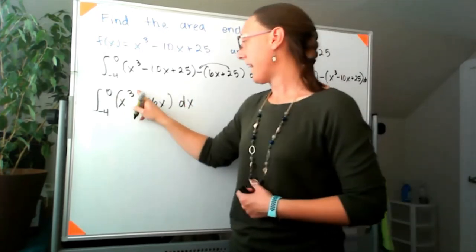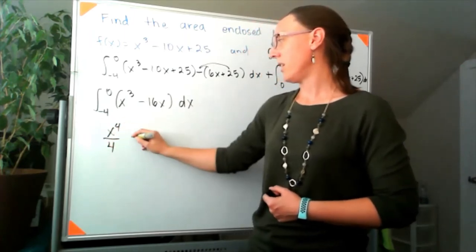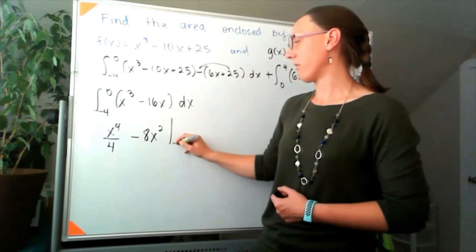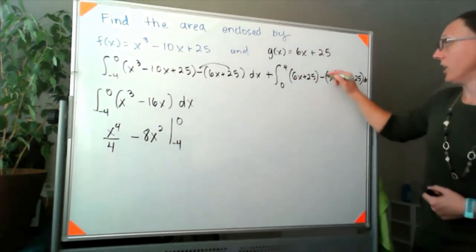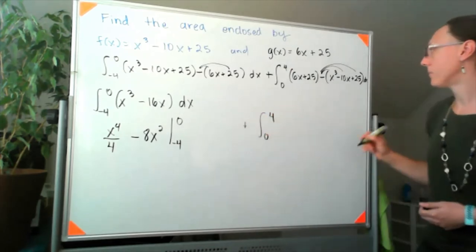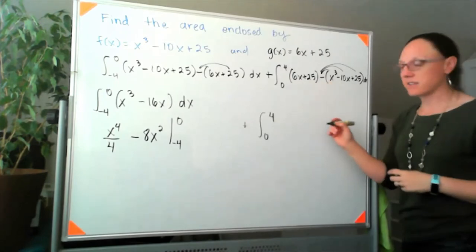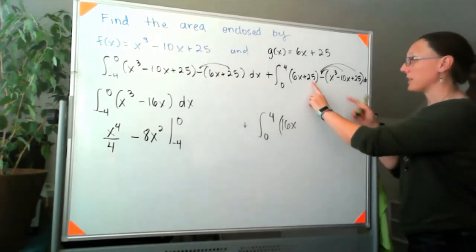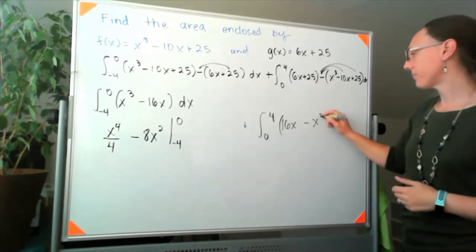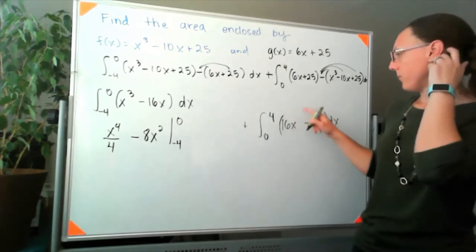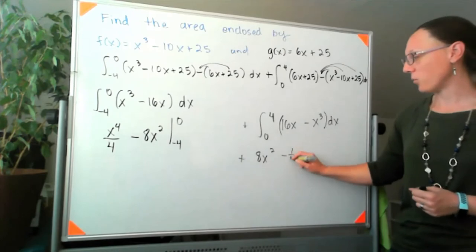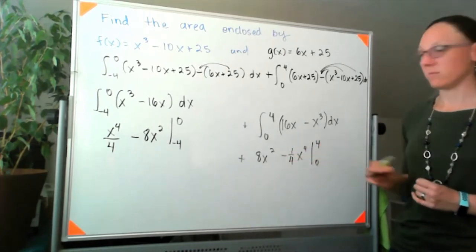I'll integrate x³ - 16x: that gives x⁴/4 - 8x², going from -4 to 0. Over here for the second integral, when I distribute the minus sign I get 6x - (-10x) = 16x, and 25 - 25 cancels, leaving -x³ + 16x. Integrating that gives 8x² - x⁴/4, going from 0 to 4.